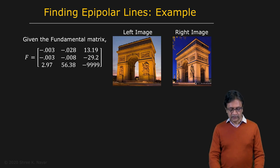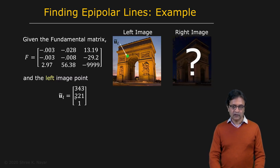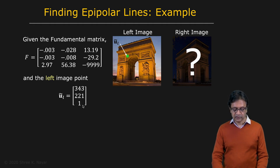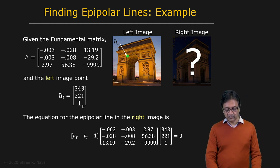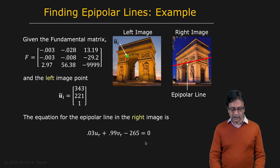All right. So here's an example. Let's say that this is your fundamental matrix, which was computed for these two images right here. And let's say I give you one point in the left image. These are its homogeneous coordinates. These are the pixel values, homogeneous coordinates. So simply plug that into your epipolar constraint and you get this straight line equation for UR, VR. And that corresponds to this line right here.